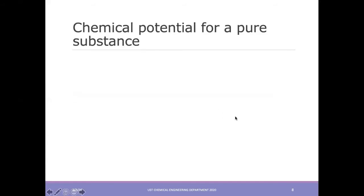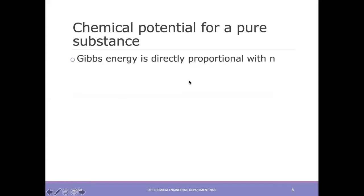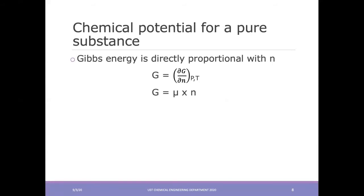Continuing with the chemical potential of a substance: Gibbs free energy is directly proportional to the number of moles. G = mu × N, so the molar Gibbs free energy G_M = G/N is equivalent to the chemical potential mu.